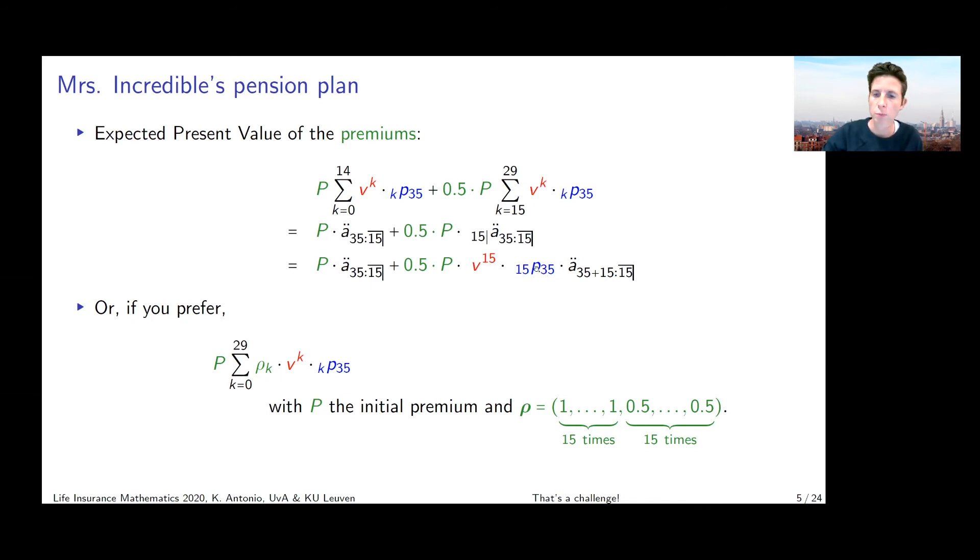I'm using my survival probabilities in order to value this stream of premium payments. If I jump to the international actuarial notation, I can recognize here in this first part, the EPV of a life annuity with term 15 years issued to a 35 year old. And here in the second summation, I recognize the EPV of a term life annuity, but with a deferment that is deferred over 15 years. Because here, the cash flow that is valued in the second summation, that only starts from time 15 on.